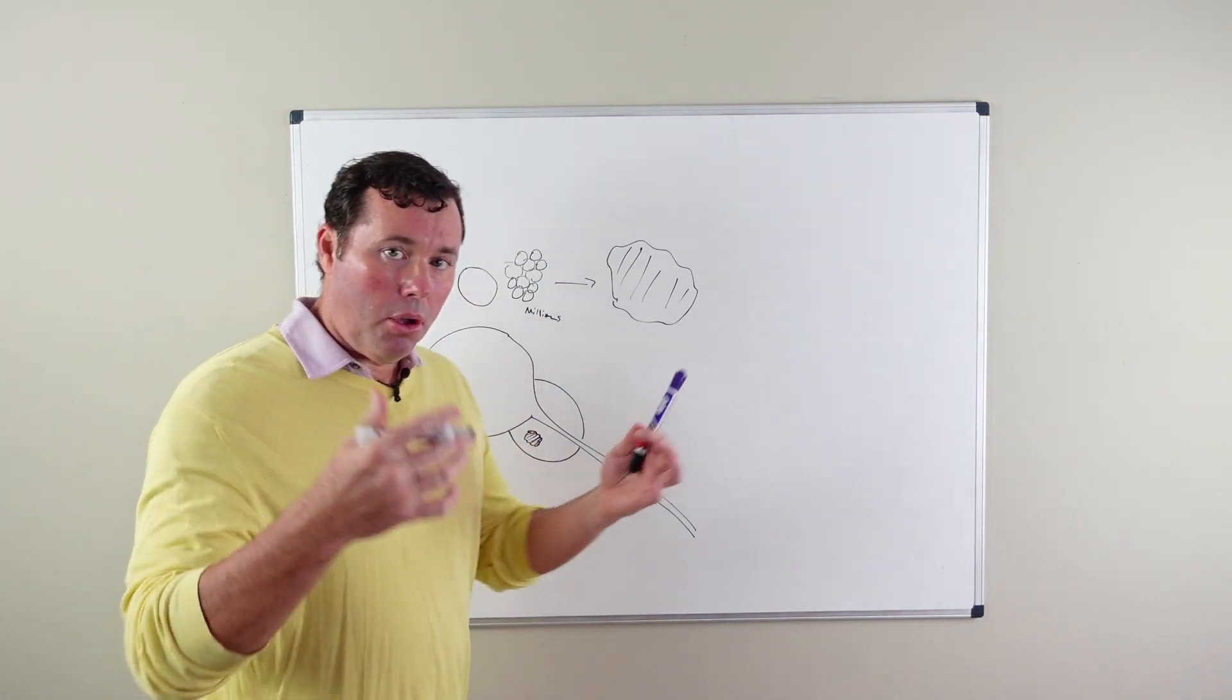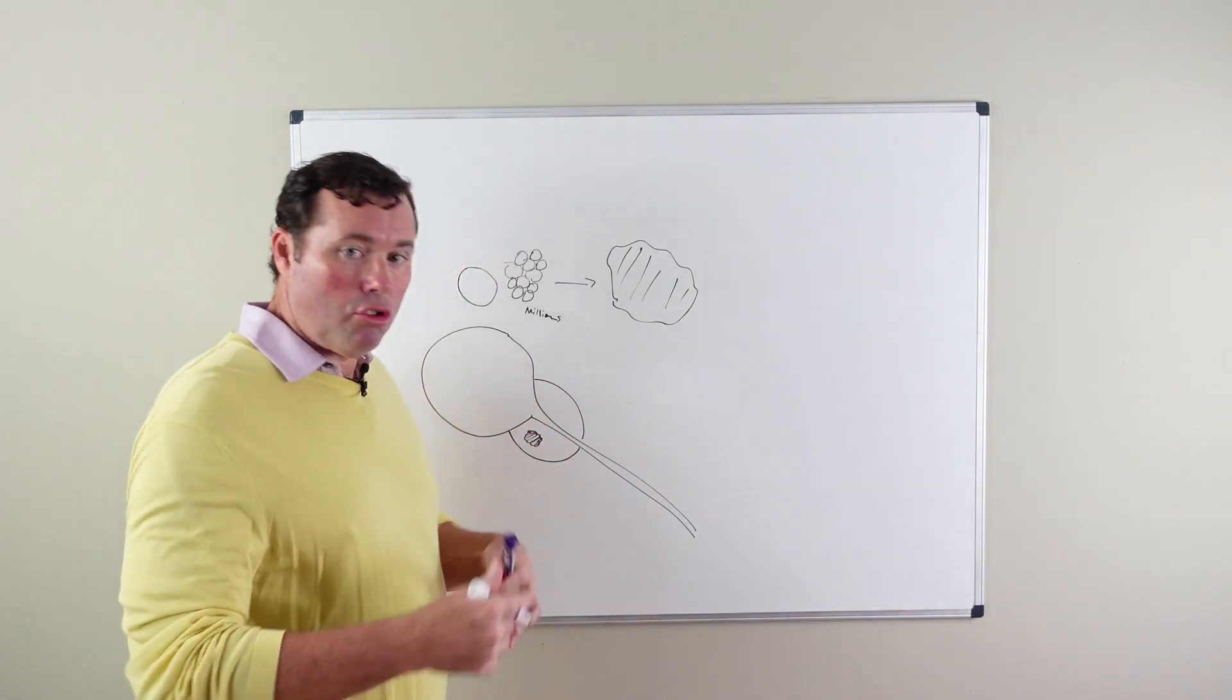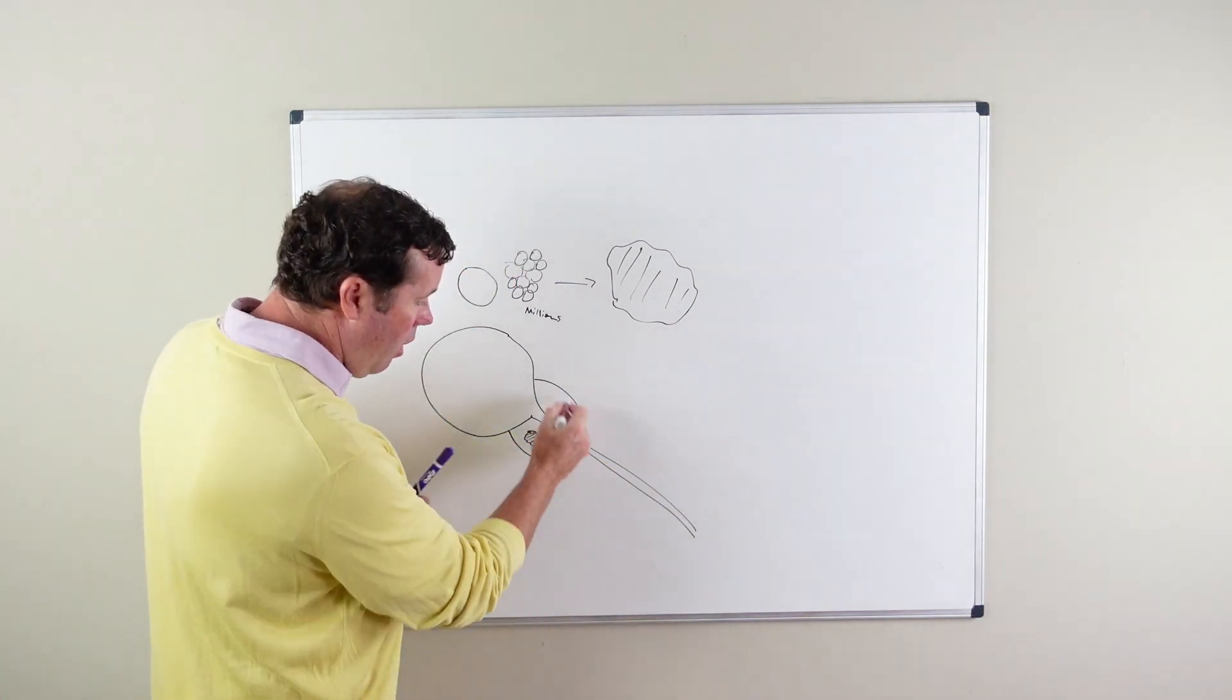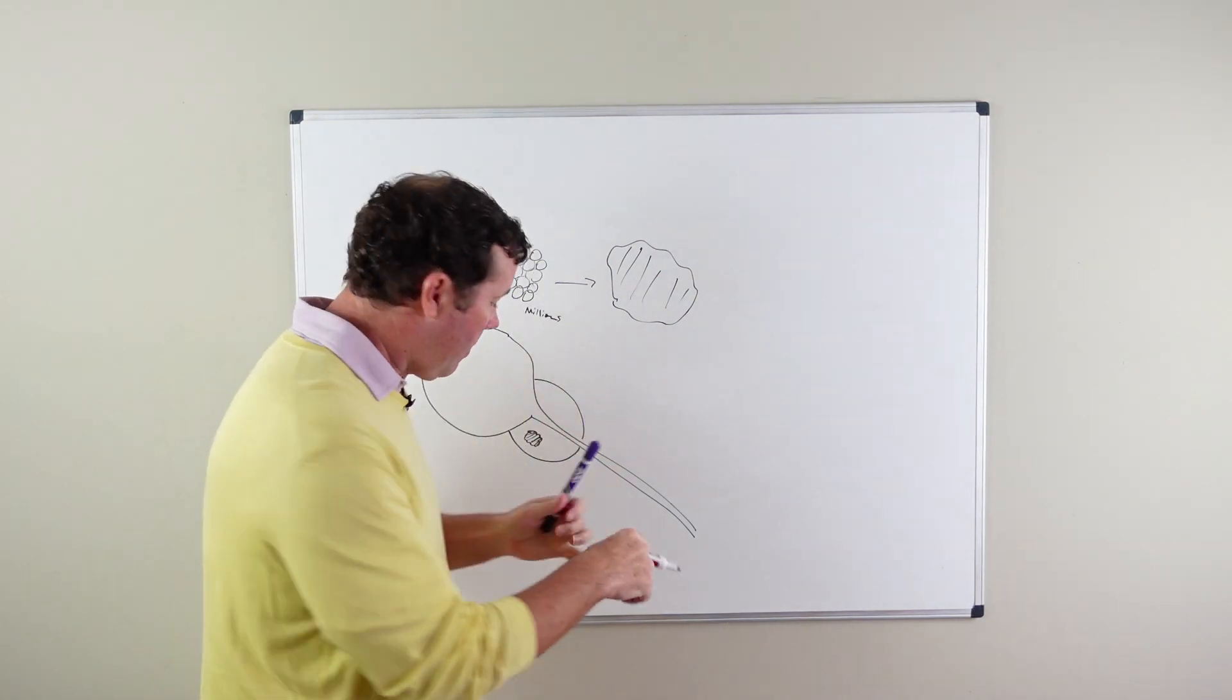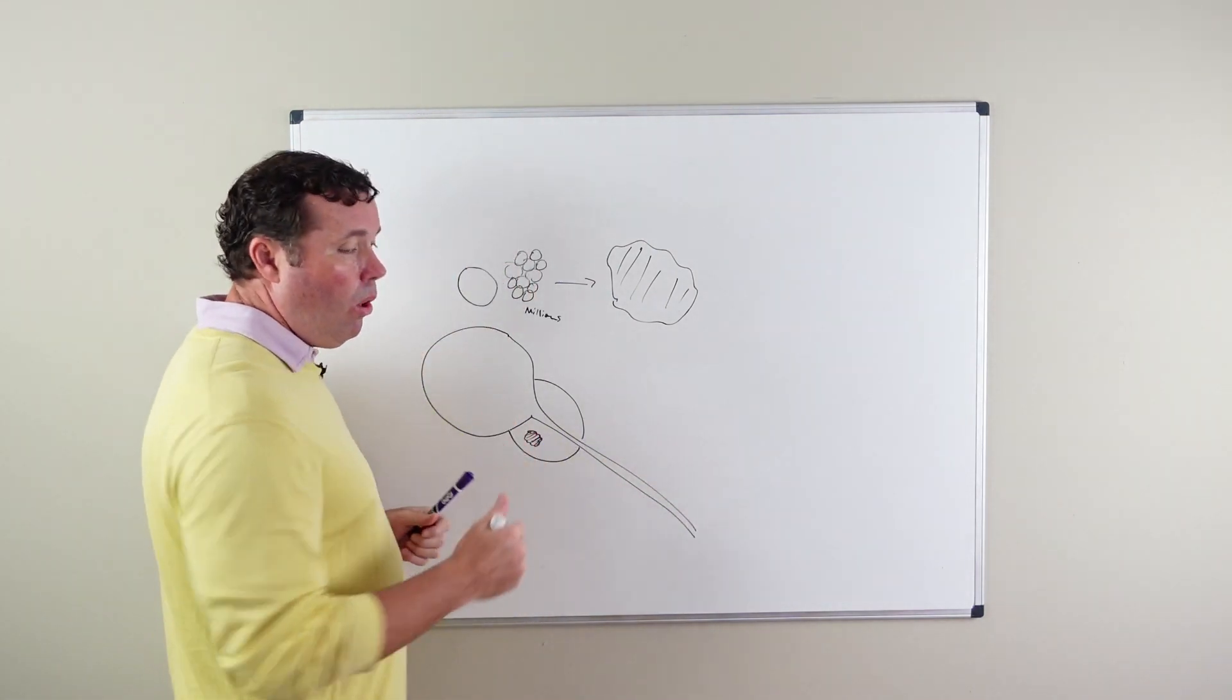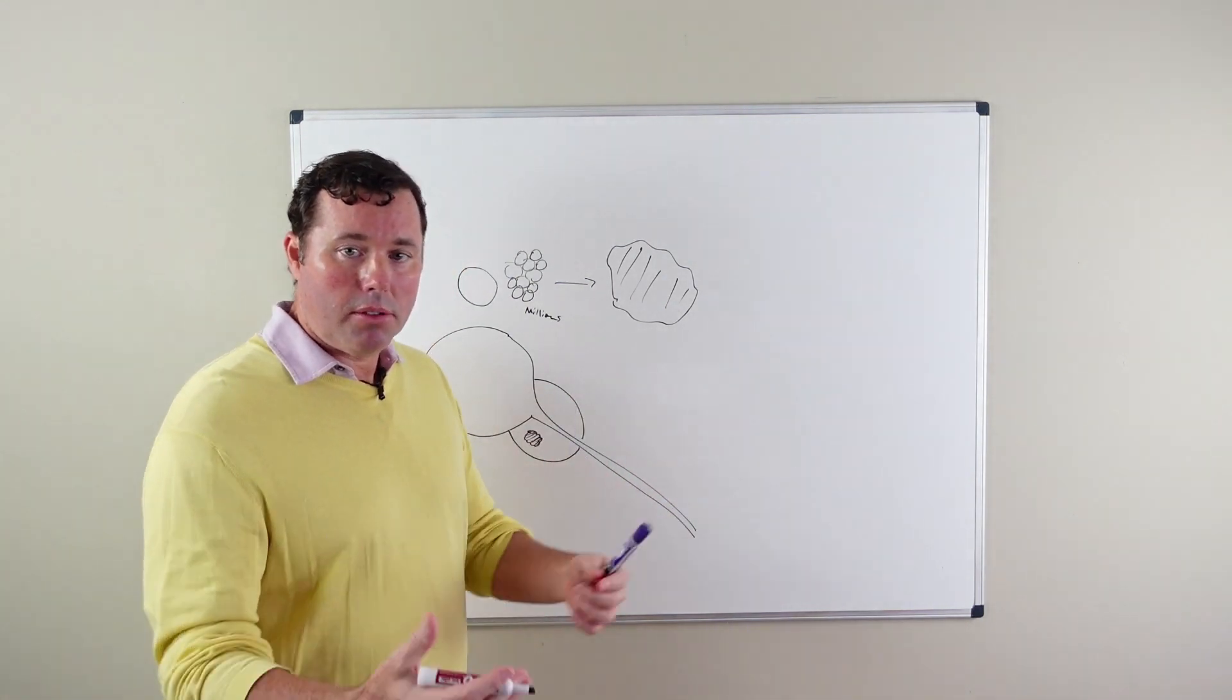The goal with prostate cancer is to find this cancer early. The earlier you find it, oftentimes the better people will do. Local disease, or cancer just within the prostate, is better than cancer that has spread outside. The goal is early detection through prevention, PSA screening, and paying attention to your body.